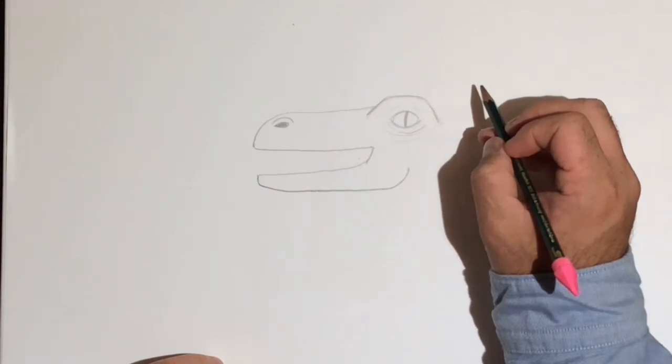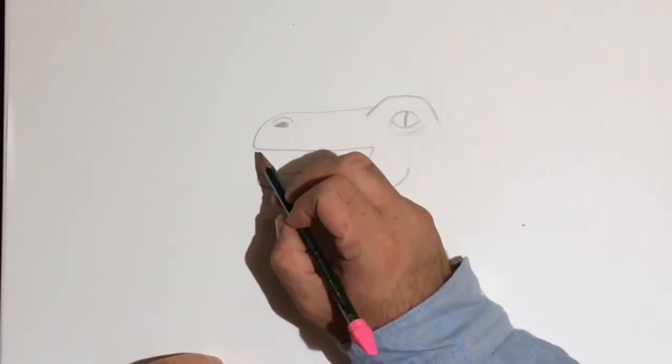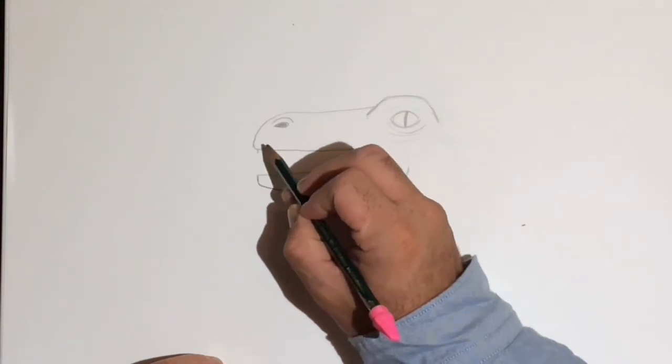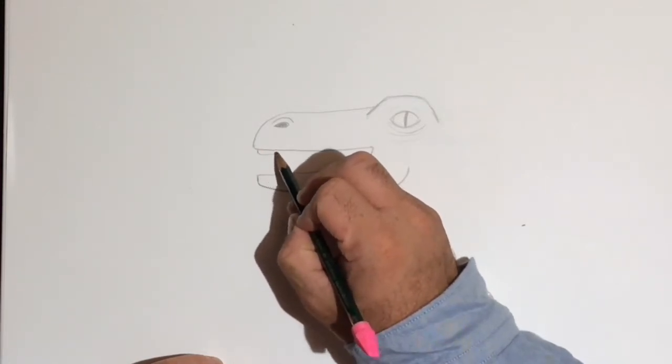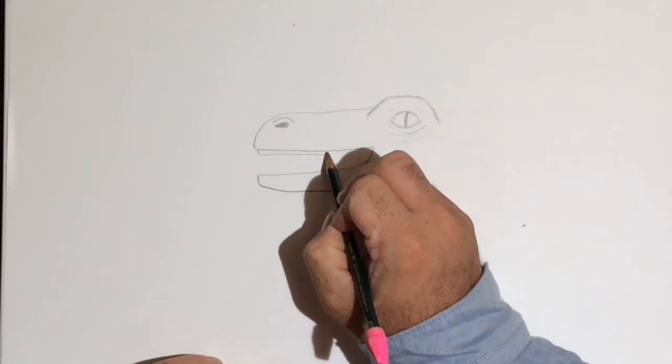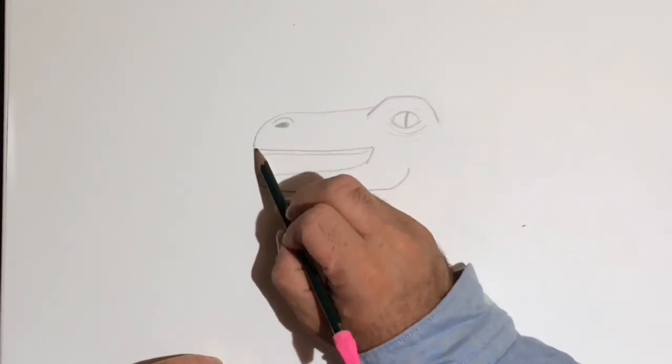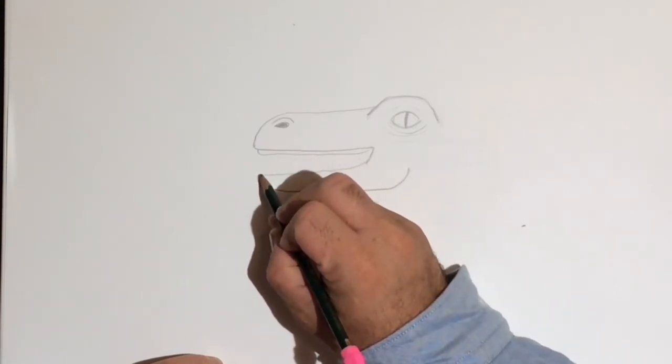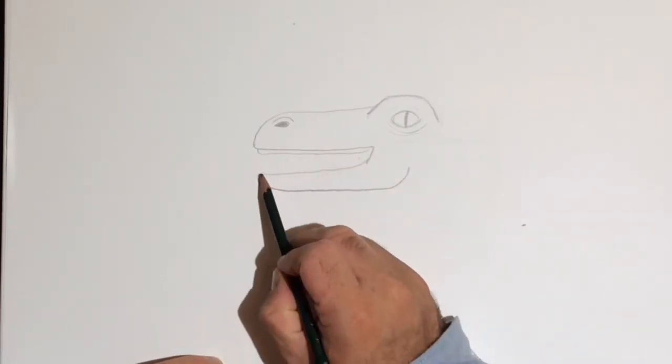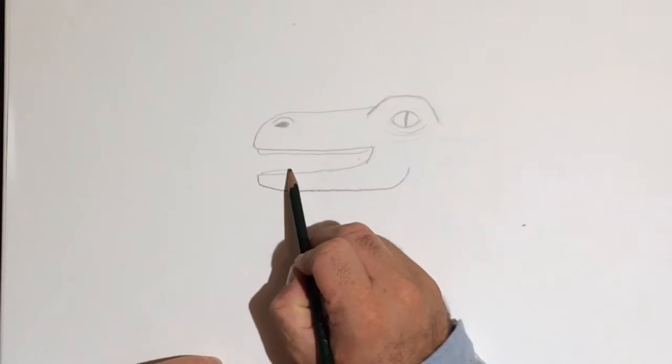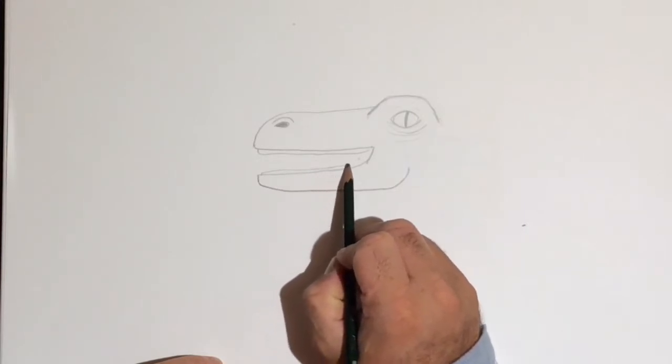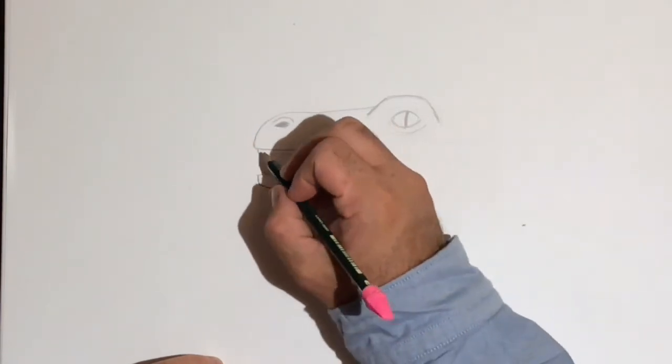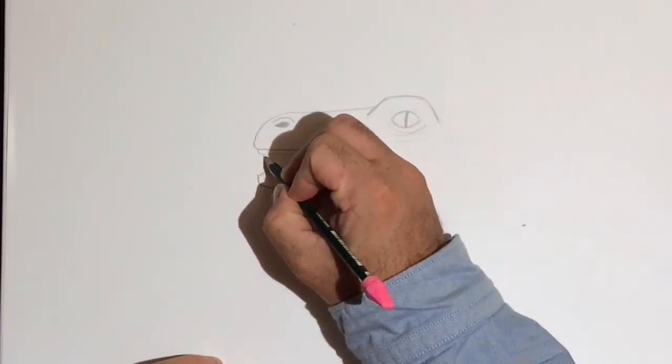Okay, now we're going to add teeth and gums. But first gums, then teeth. So I'm just going to kind of double this line up right there, and I didn't start right at the end—I made a little gap because that's where the lip is. Do the same thing down here, right here. Then we can start adding the teeth.